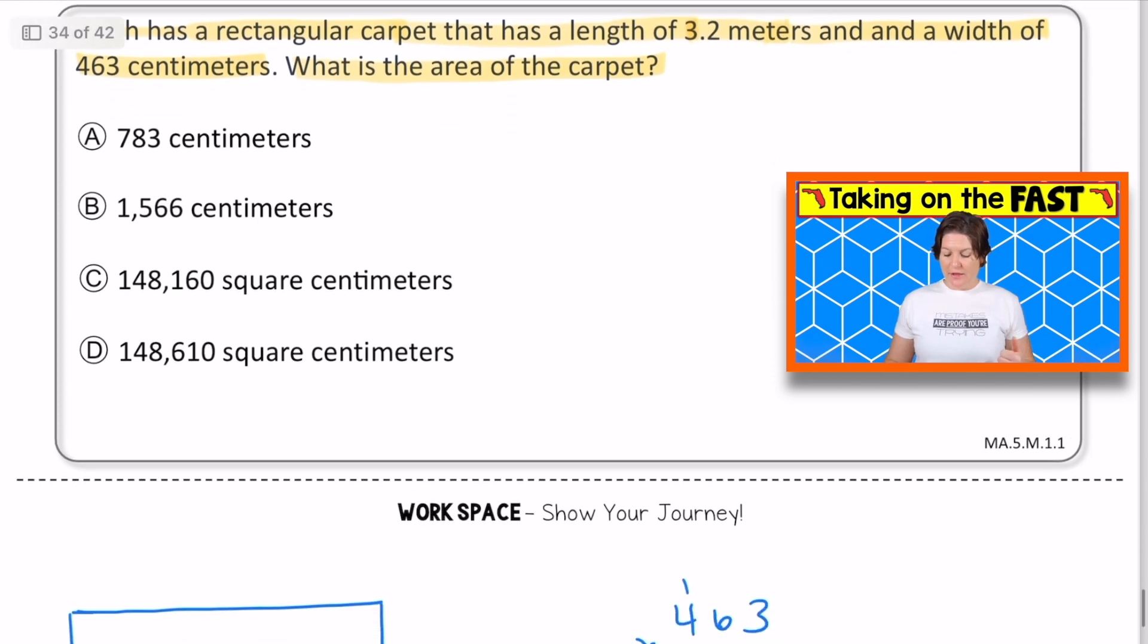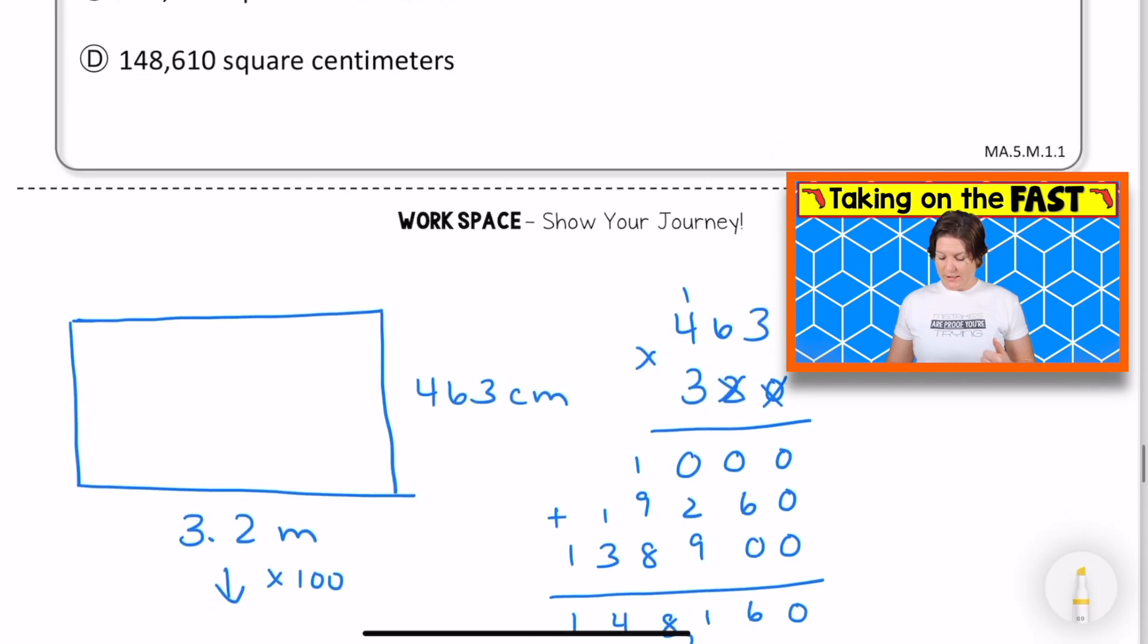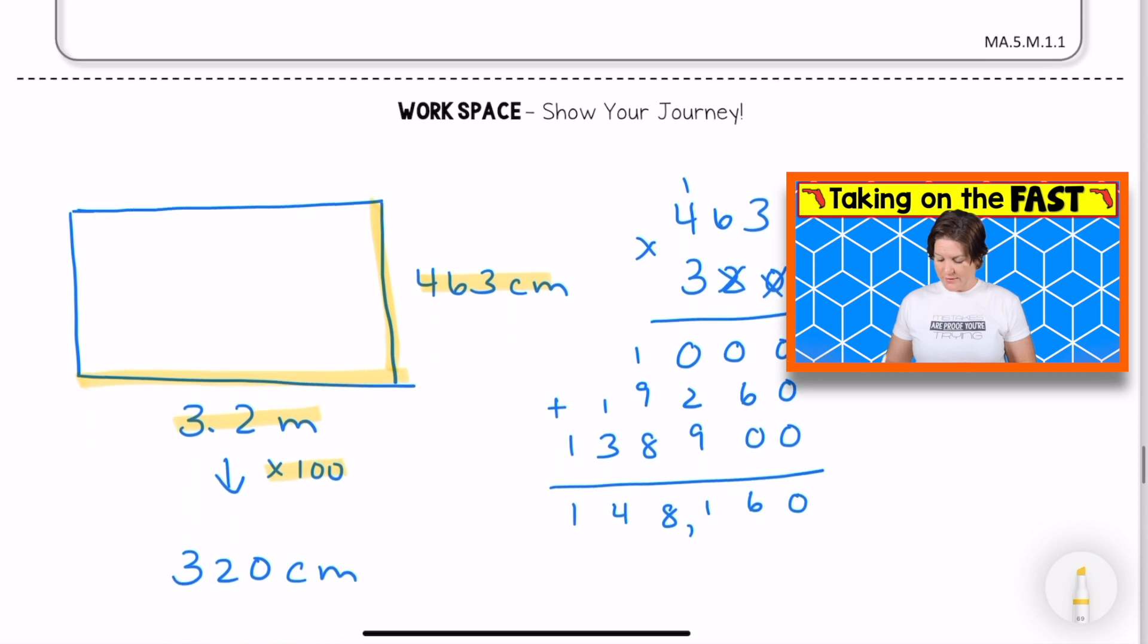Finding the area. I know that the area is the length times the width. So what I did was I said the length right here is 3.2 meters. The width right here was 463 centimeters, two different units. So I had to convert one to make them the same. I converted 3.2 times 100 to get 320 centimeters.